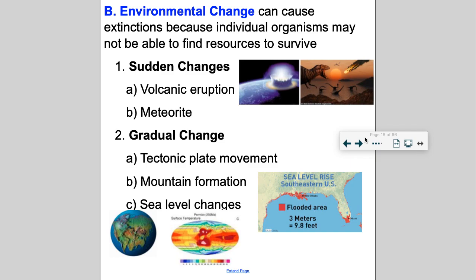For environmental changes, you could have a sudden change — like a volcanic eruption that wipes out an island or part of a continent, or maybe a super volcano. You can have a meteorite or comet that strikes Earth, wiping out life right away. You can also have gradual changes like tectonic plate movements.